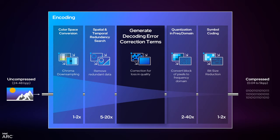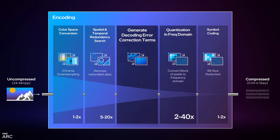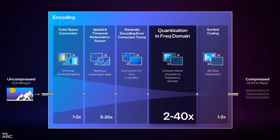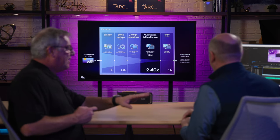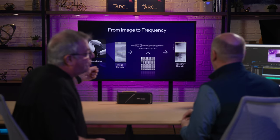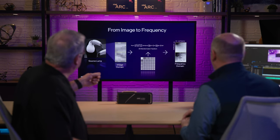Now we're dealing with those residuals. What we did in step two was generate a set of instructions for going from a full frame to a predicted frame. The rest of the process is about making that residual smaller. The first thing we do is quantize in the frequency domain — this is a big hitter at 2 to 40x compression.